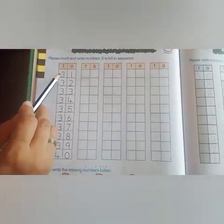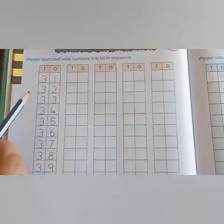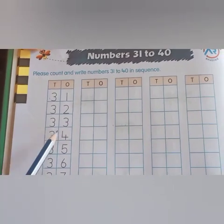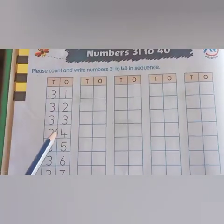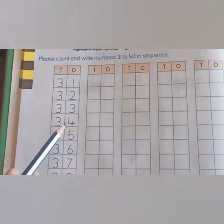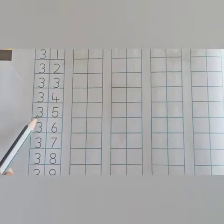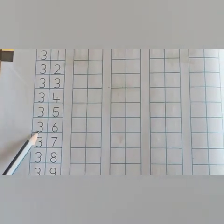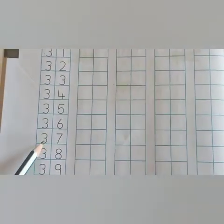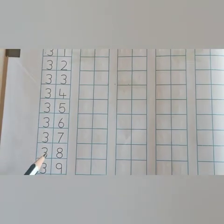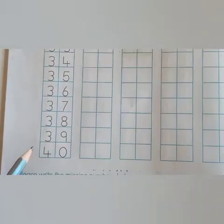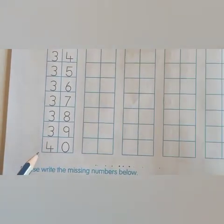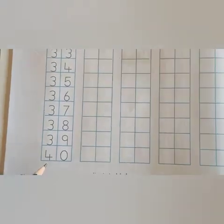Which number is this? 31, 31. 32, 32. 33, 33. 34, 34. 35, 35. 36, 36. 37, 37. 38, 38. 39, 39. 40, 40.